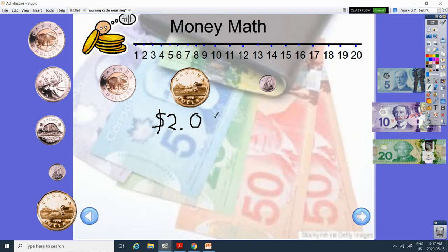And this coin is gold. Has a loon on it. It's called the loonie. It's $1.